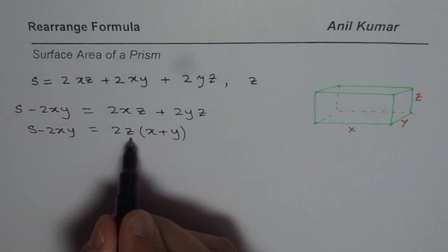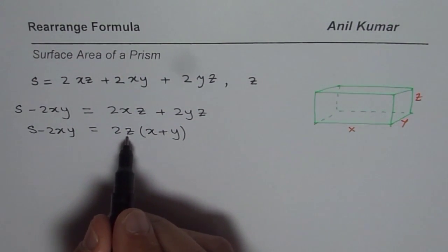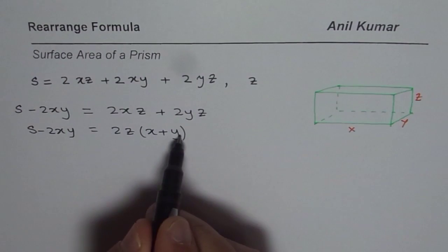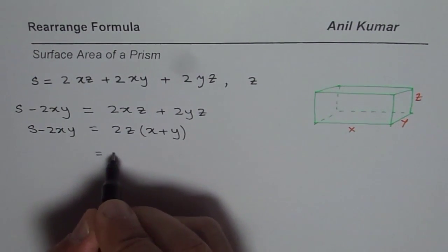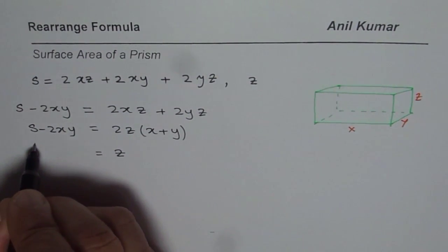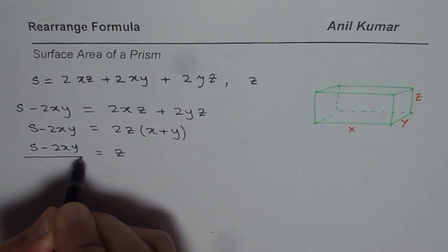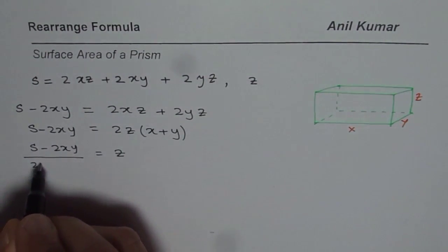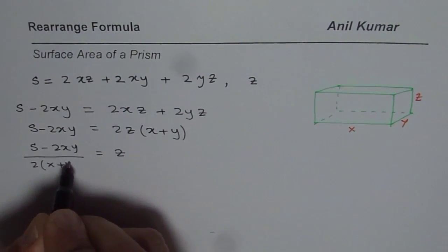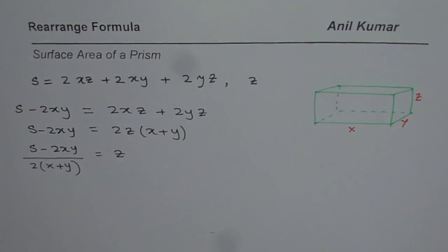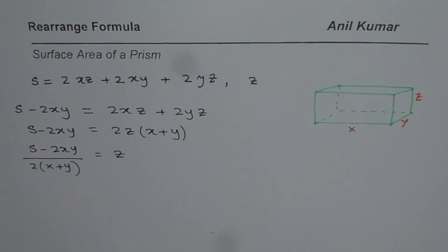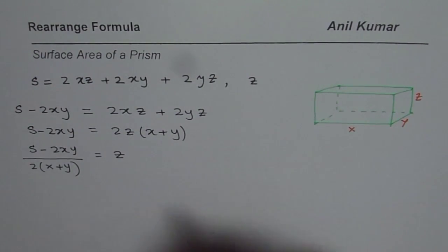Now I can isolate Z by dividing both sides by 2 times (X + Y). So we get Z equals S minus 2XY, all divided by 2 times (X + Y). That is how we can rearrange and find one of the dimensions in terms of the other dimensions of a prism.